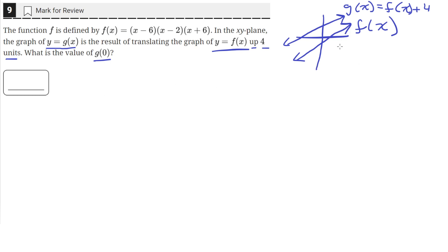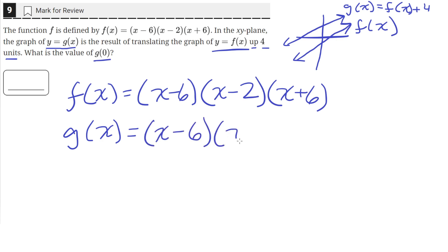So we can apply that same logic to this f(x). So f(x) is equal to (x - 6)(x - 2)(x + 6). So then g(x) is just equal to f(x) plus 4. So g(x) is just (x - 6)(x - 2)(x + 6) plus 4.